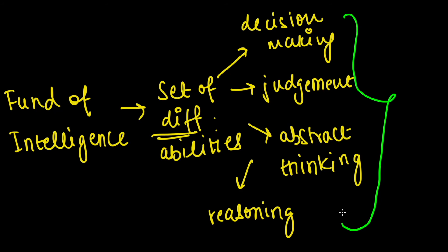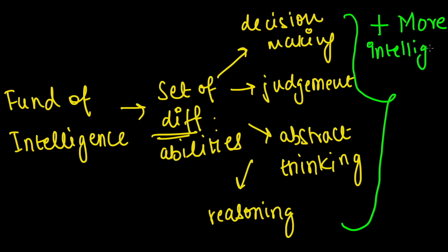The fund of abilities can consist of more or fewer abilities, and the level of each ability can also differ from person to person. That determines how intelligent we are. If the level or number of abilities is greater, that person would be more intelligent; if abilities are fewer or at a lower level, that person would be less intelligent.